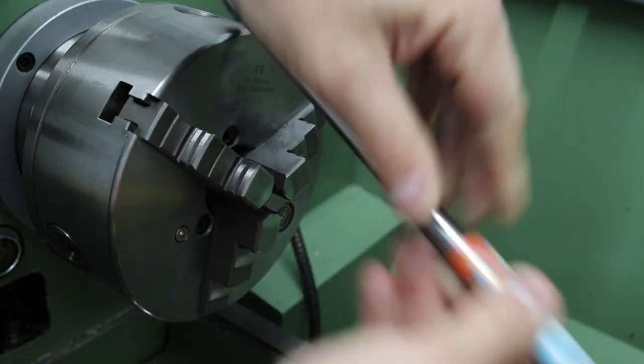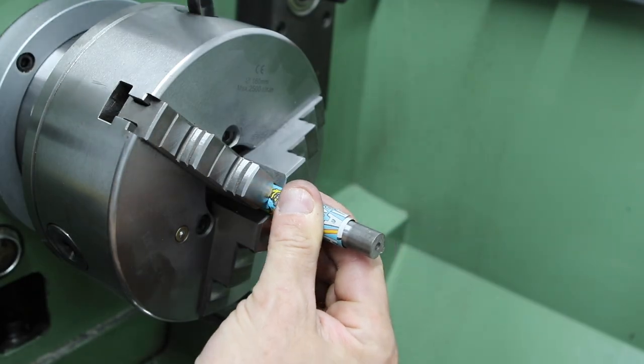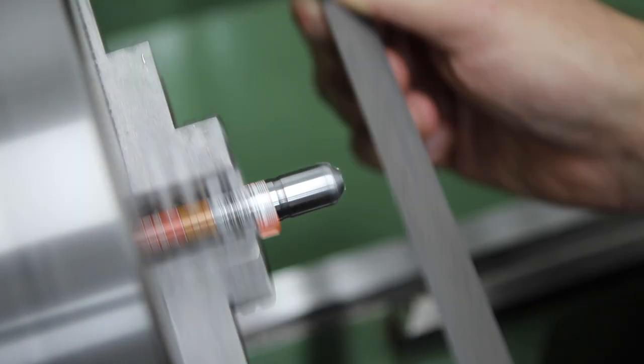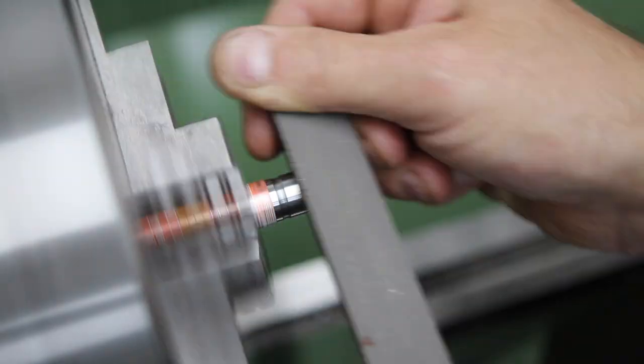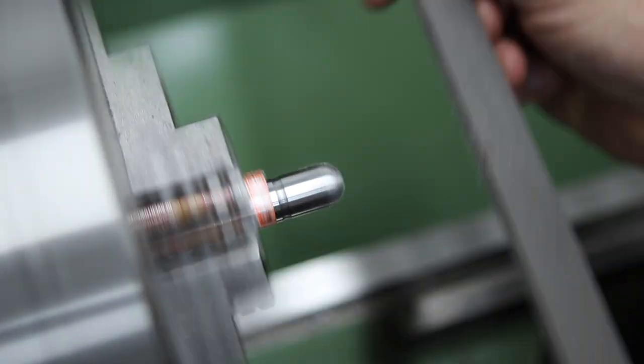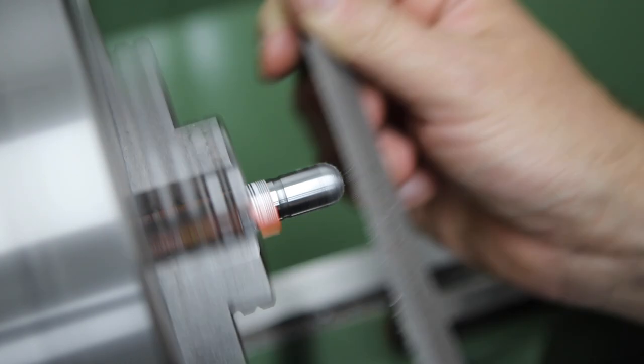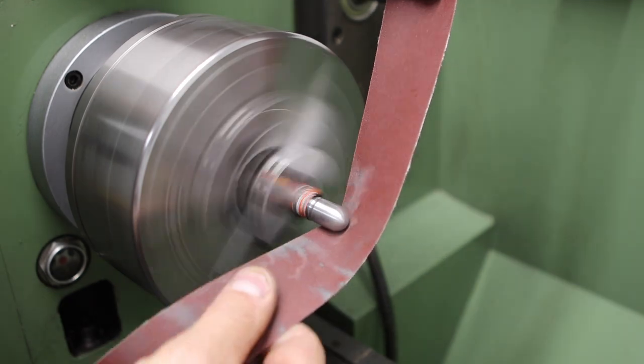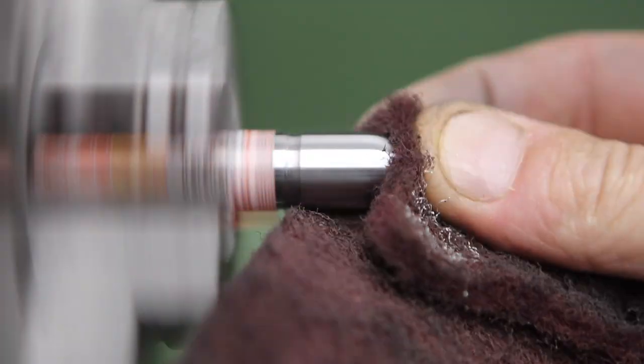The final operation on this part is to flip it round in the chuck and machine the other end of the shaft there. I'm protecting the already machined surfaces with a little piece of aluminum drinks can, and I'm using a lathe file here to round the end over, then just finishing that off with some different grades of sandpaper and finally some scotch brite.